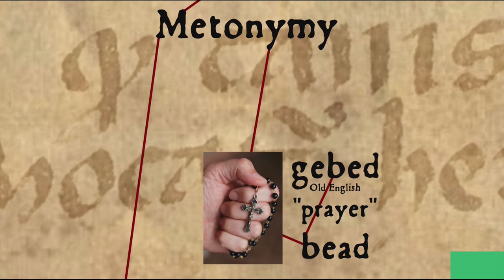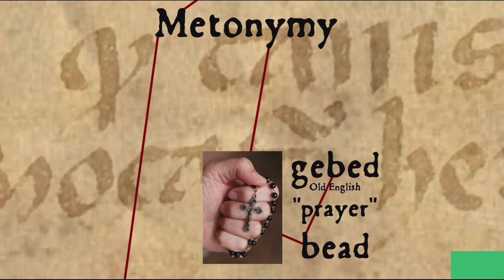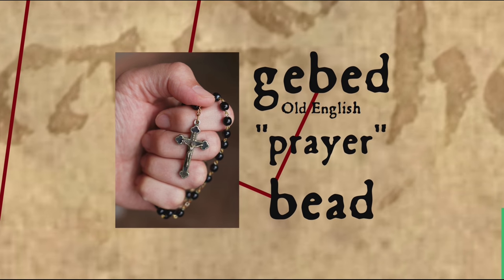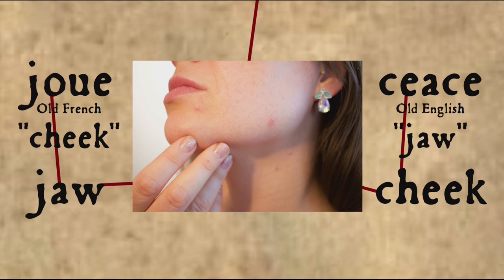Metonymy, on the other hand, is a semantic shift that happens when two things are closely associated with each other. For instance, 'bead' originally meant prayer, coming from a root that also gives us the word 'bid.' But because of the practice of the rosary or prayer beads, the sense transferred from the prayers themselves to the little decorative balls on a string or chain used to count the prayers. An interesting case of metonymy can be seen with the words 'cheek' and 'jaw.' Cheek in Old English meant jaw or jawbone, and is probably related to the verb 'chew,' but by metonymy it shifted to the closely associated fleshy part above the jaw. The word 'jaw,' on the other hand, probably comes from the French word 'joue,' meaning cheek. So originally, jaw meant cheek and cheek meant jaw.